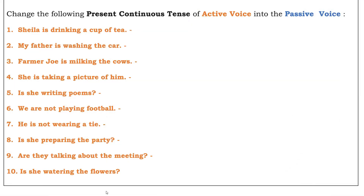On the next slide there are some exercises for you to do — change the following present continuous tense active voice into its passive form. I'll do number one for you. 'Sheila is drinking a cup of tea.' 'A cup of tea' is the object, so it comes first. The answer is: 'A cup of tea is being drunk by Sheila.' 'Drinking' — first form plus -ing — changes into its third form, 'drunk.'